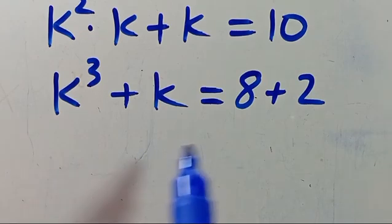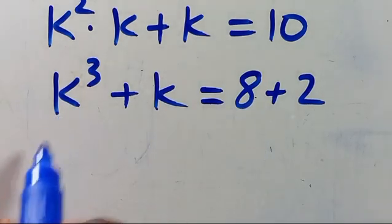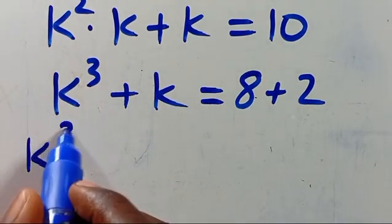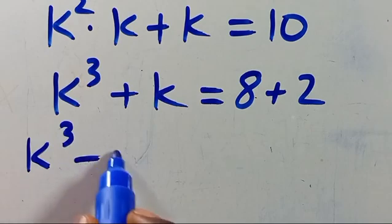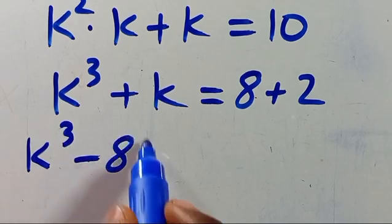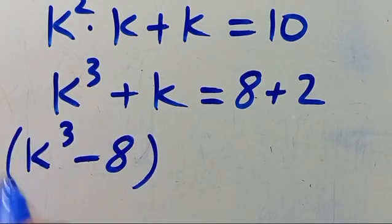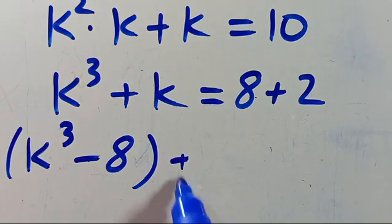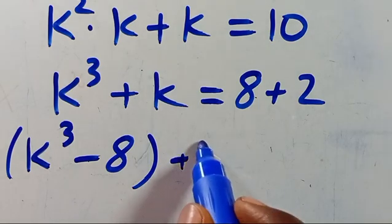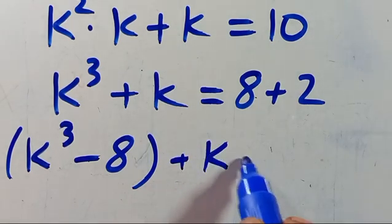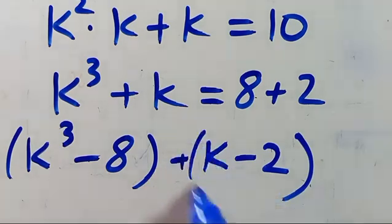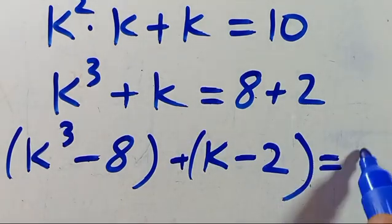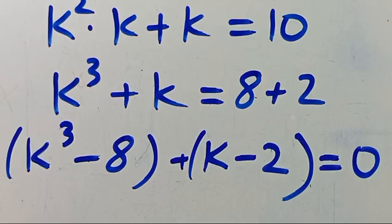So from here, let's group these terms together, so we have k to the power of 3 minus 8, then plus k minus 2 in parenthesis, then let's set everything equal to 0.